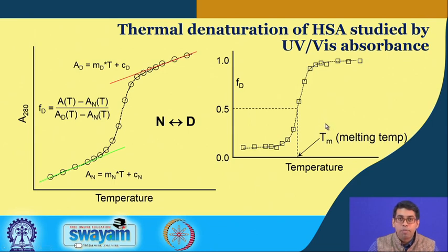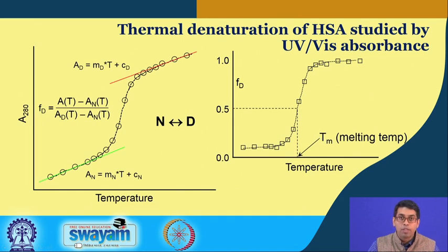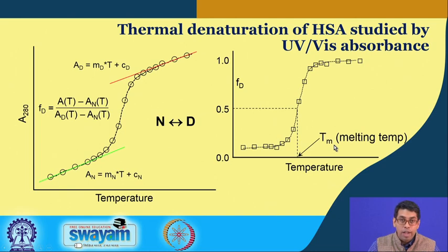At this temperature, 50 percent of the protein is in the native state and 50 percent is in the denatured state. This particular temperature is called the melting temperature, represented by T_m. The melting temperature is a very important parameter used to characterize a protein: if T_m is high, the protein is very stable; if T_m is low, the protein is unstable. So melting temperature gives us a very good idea about the stability of a particular protein.